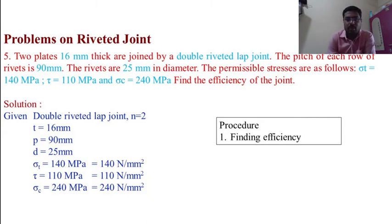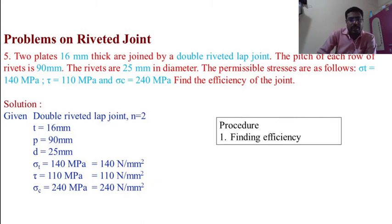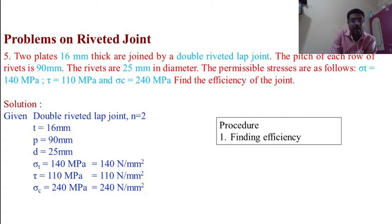This is a double riveted lap joint, so N = 2. Given: t = 16 mm, pitch P = 90 mm, d = 25 mm, σT = 140 MPa, τ = 110 MPa, σC = 240 MPa. We find efficiency by calculating all strength values.